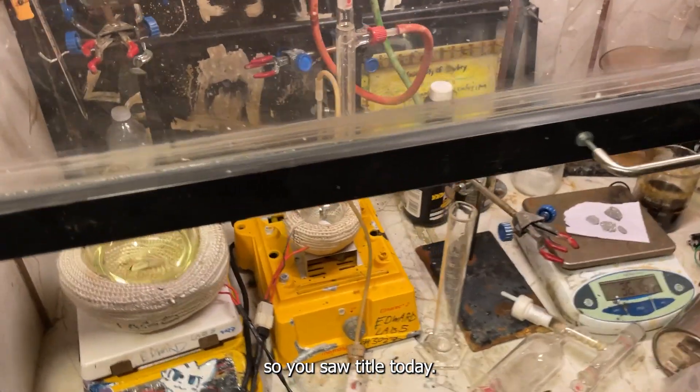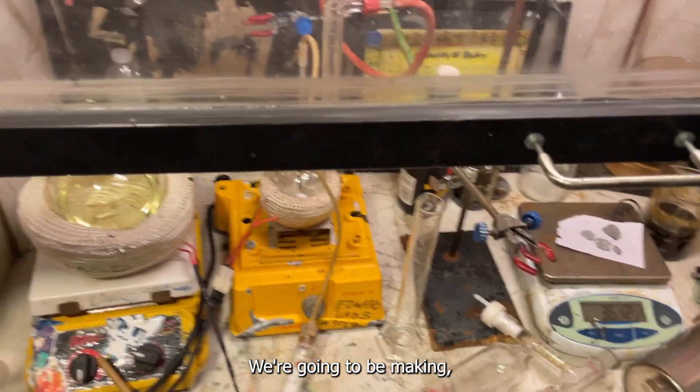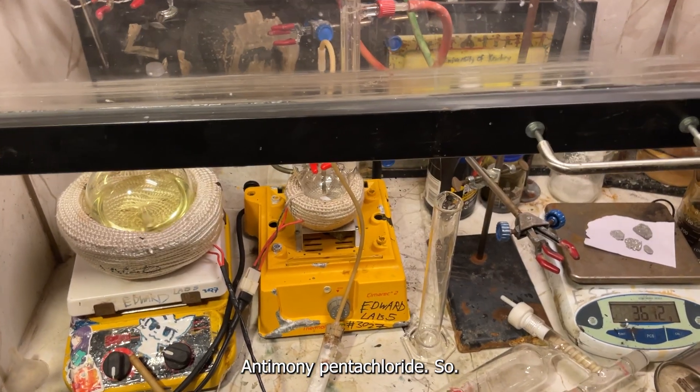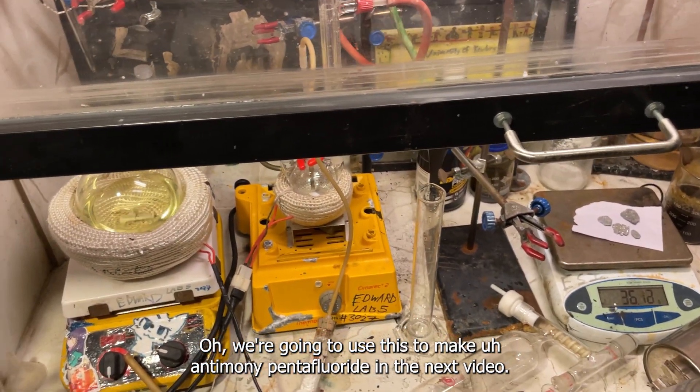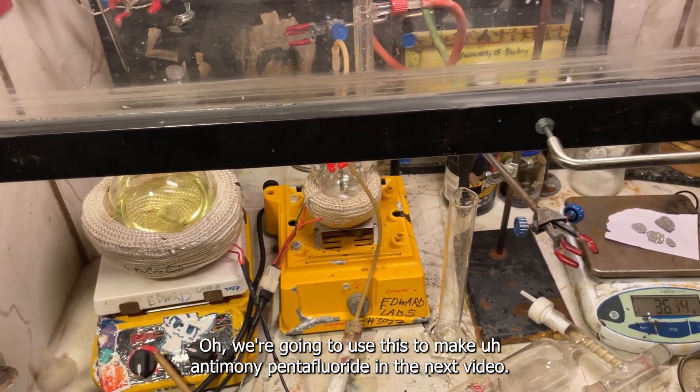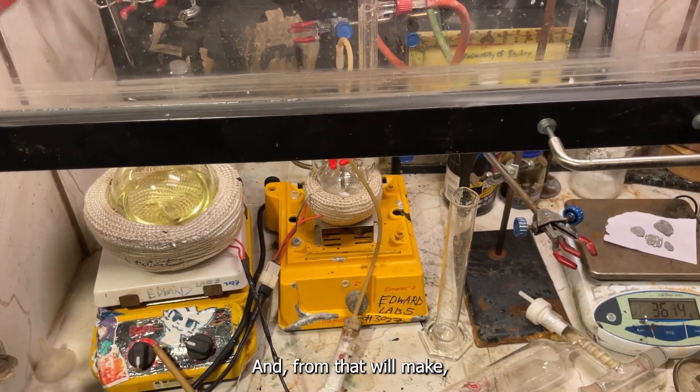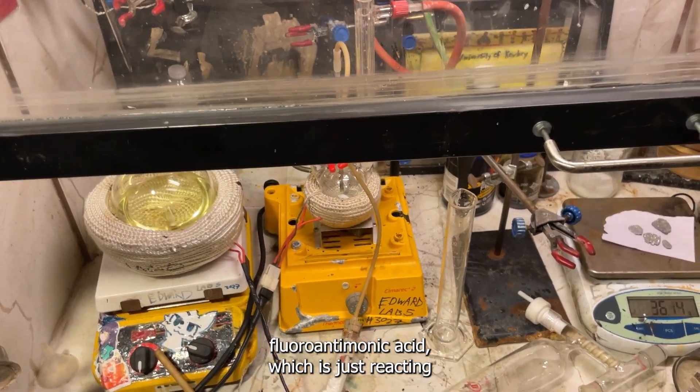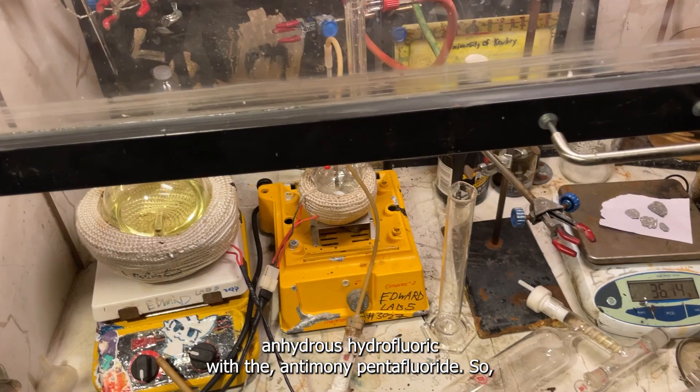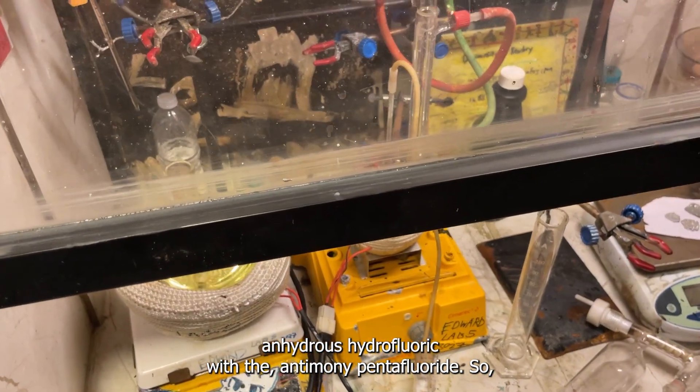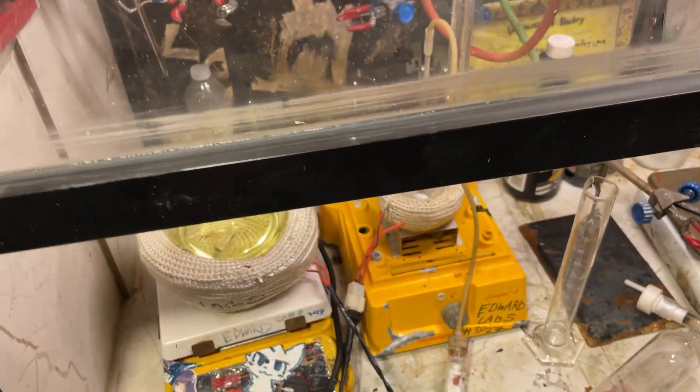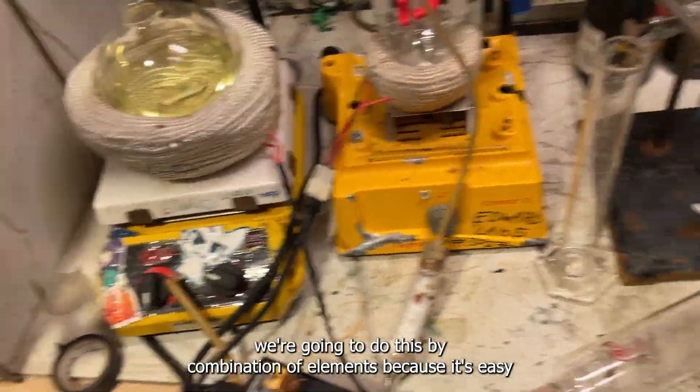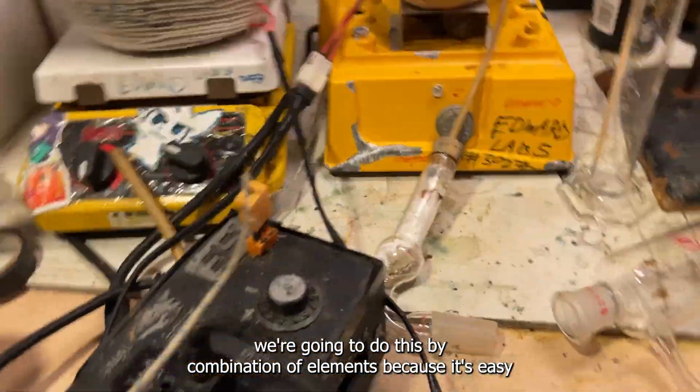So we saw the title today, we're going to be making antimony pentachloride. We're going to use this to make antimony pentafluoride in the next video. And from that we'll make fluorantimonic acid, which is just reacting anhydrous HF with the antimony pentafluoride. We're going to do this by a direct combination of elements because it's easy.